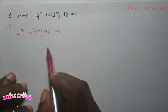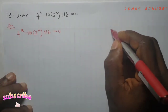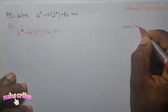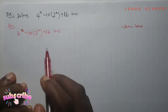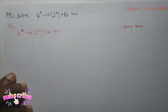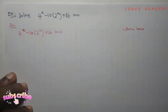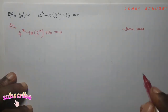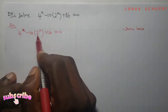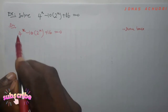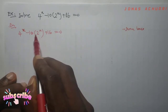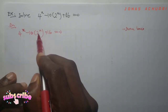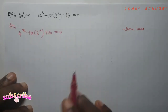The first trick is that those two terms that have x must have the same base. Here the base is 4 and the base is 2 — that is not what we want. We want them to have the same base, whether both base 4 or both base 2. The second condition is that both bases must carry x directly on top as their power — like 2 is carrying x directly on top. So the two conditions are: same base, and carrying x directly as the power.